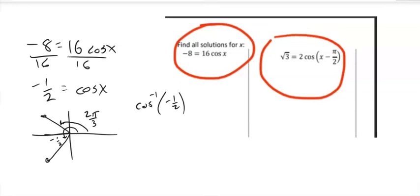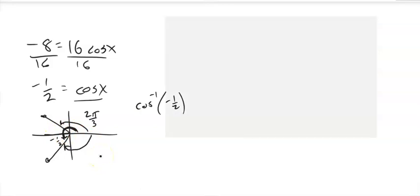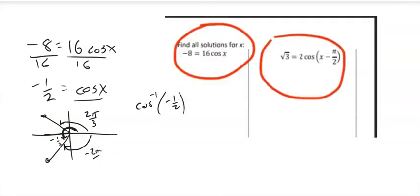So since that one is 2 pi over 3, I know that since it's cosine, the other angle, this angle right here, is going to be 2 pi minus that 2 pi over 3.